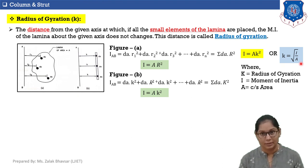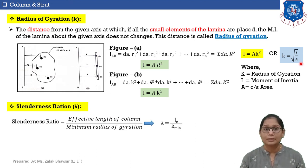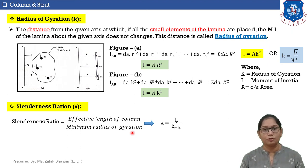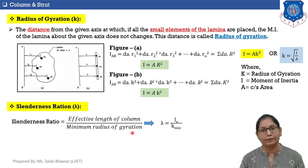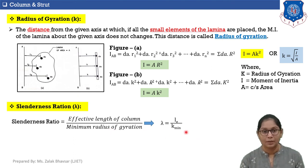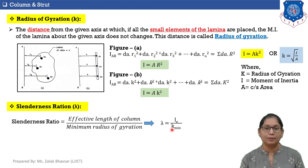Slenderness ratio is denoted by lambda. It equals the effective length of the column divided by the minimum radius of gyration. When a column carries axial compressive load, bending occurs, and the bent length is called the effective length, denoted by L_e. The minimum radius of gyration is k_min. So slenderness ratio lambda equals L_e upon k_min.